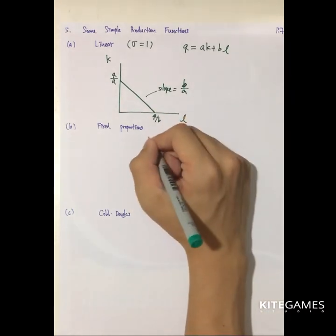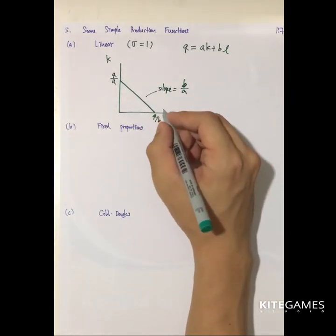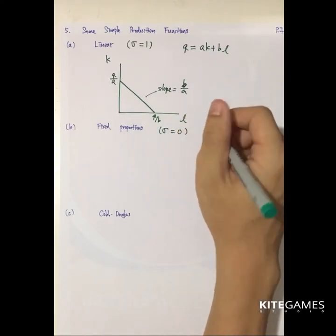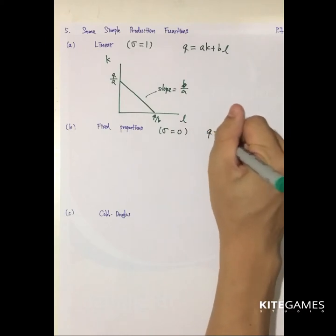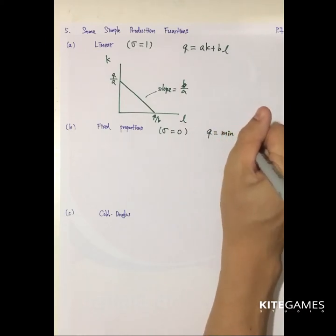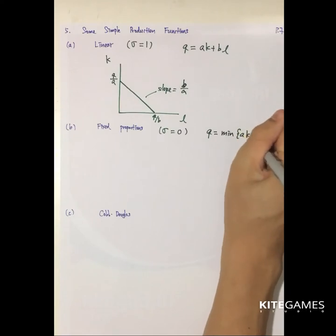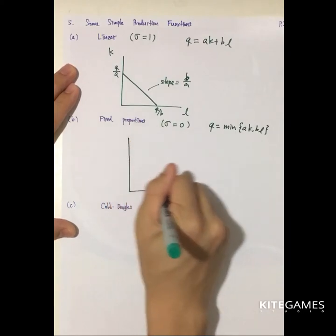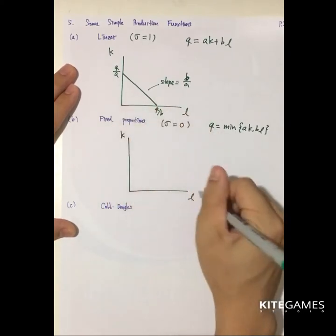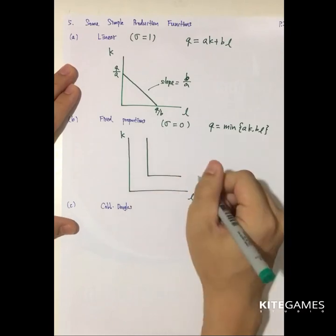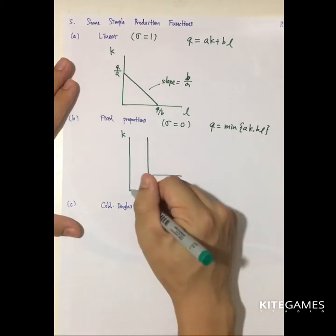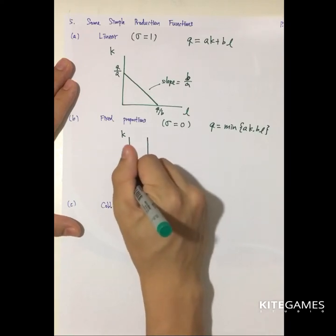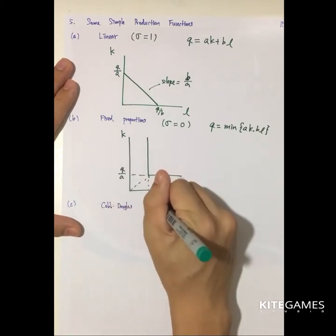For the fixed proportion case, also called the Leontief production function, the elasticity of substitution is zero — meaning the inputs cannot be substituted with each other. The production function takes the form q = min(ak, bl). Diagrammatically, the Leontief production function is L-shaped, with the corner at q/a and q/b.